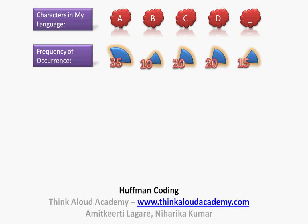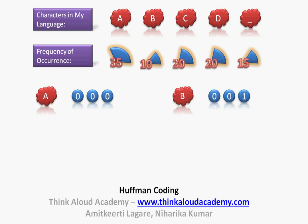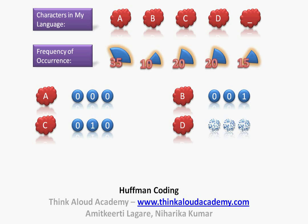But since I have an underscore, I need minimum three bits to represent each of the alphabets. So A has to be represented by 000, B shall be represented as 001, C shall be represented as 010, and D shall be represented as 011. I need to use three bits to represent each of the alphabets, and then underscore is represented as 100.